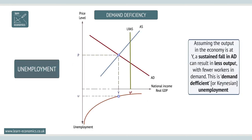A fall in AD can result in less output at Y2 and higher unemployment at U2. Assuming the output in the economy is at Y, a sustained fall in AD can result in less output with fewer workers in demand.